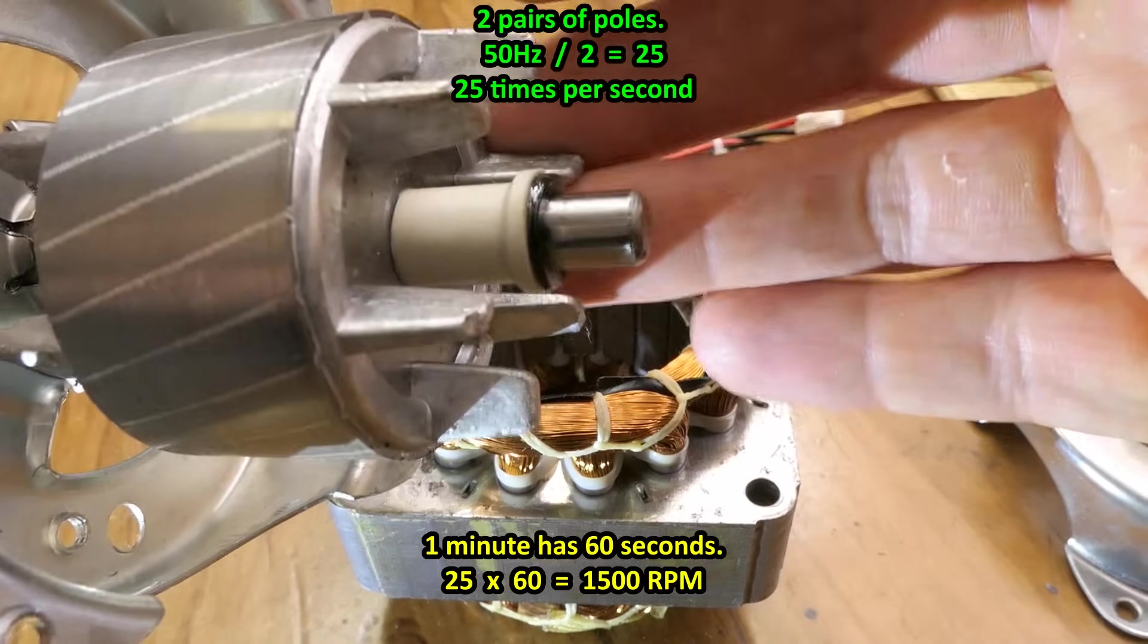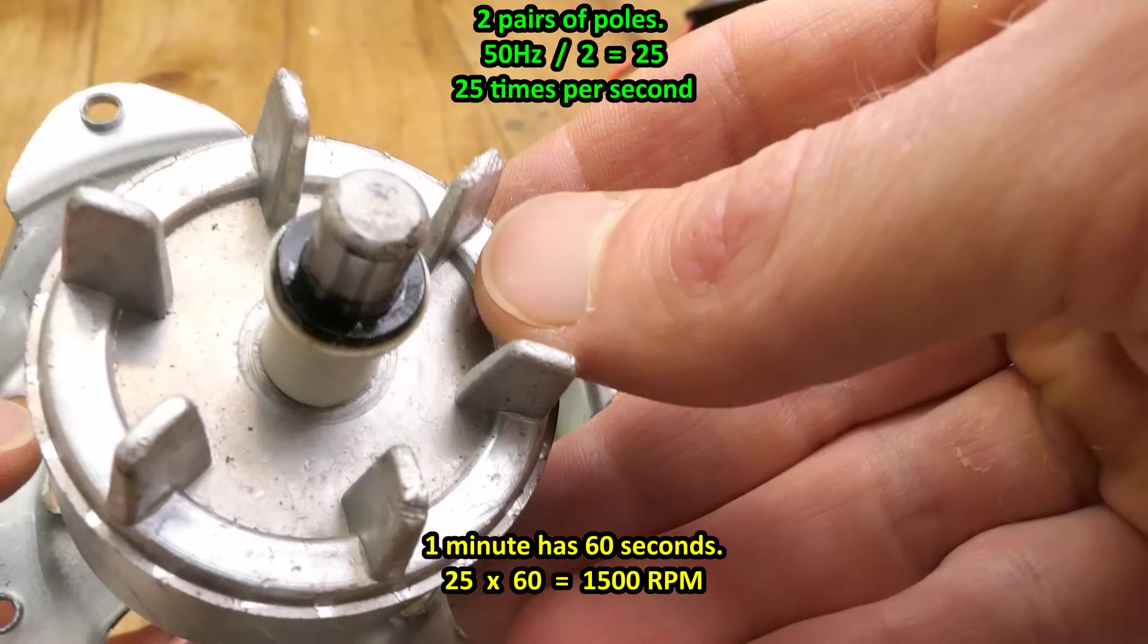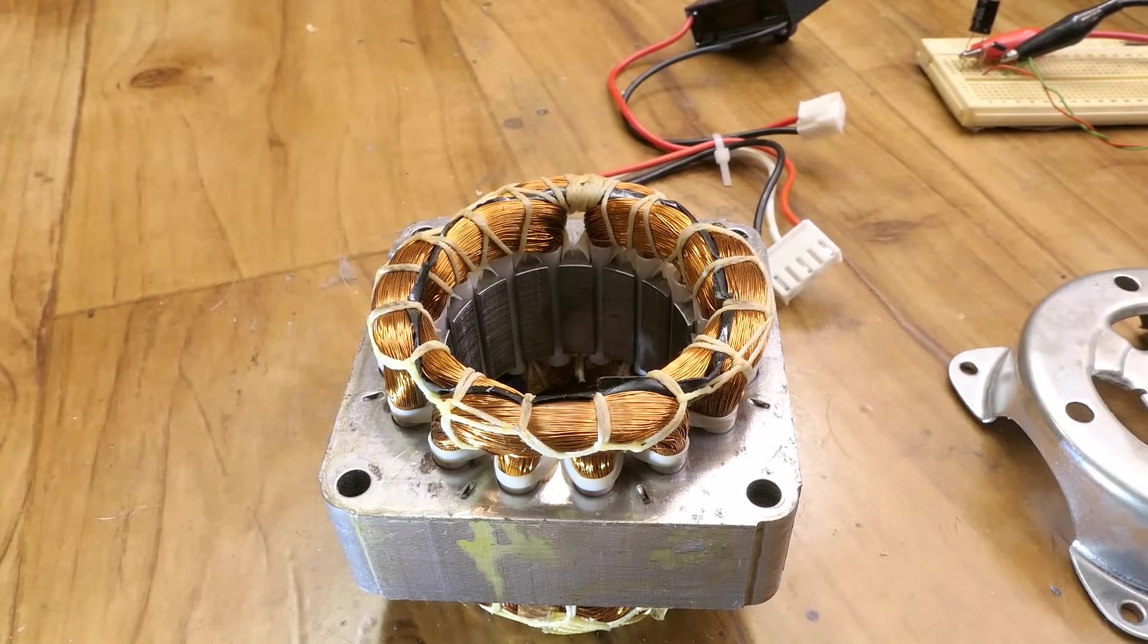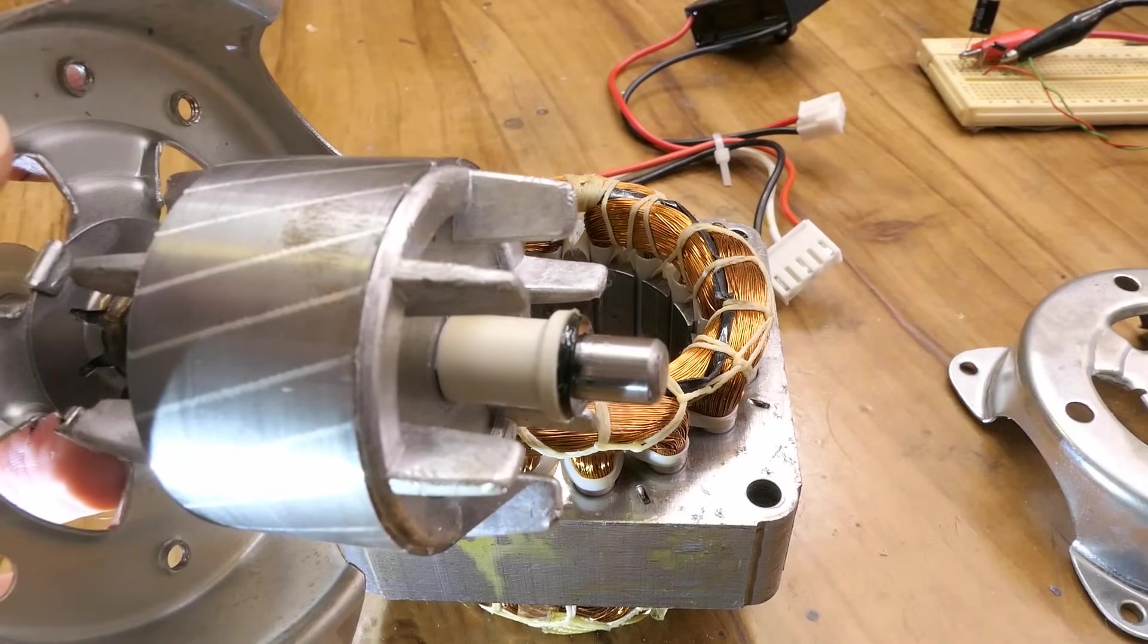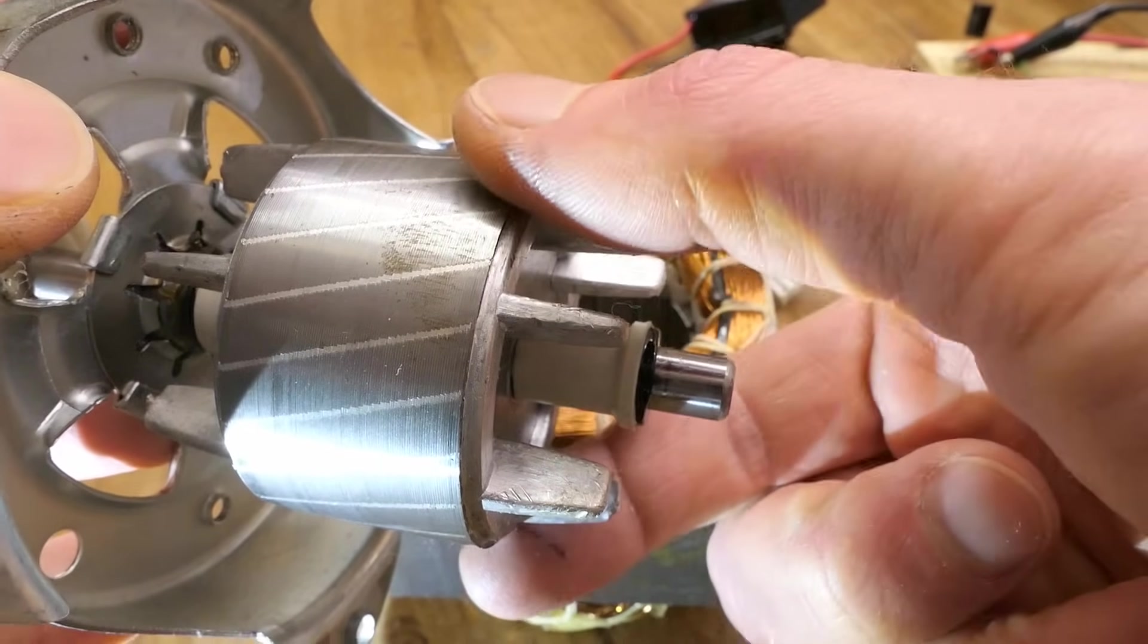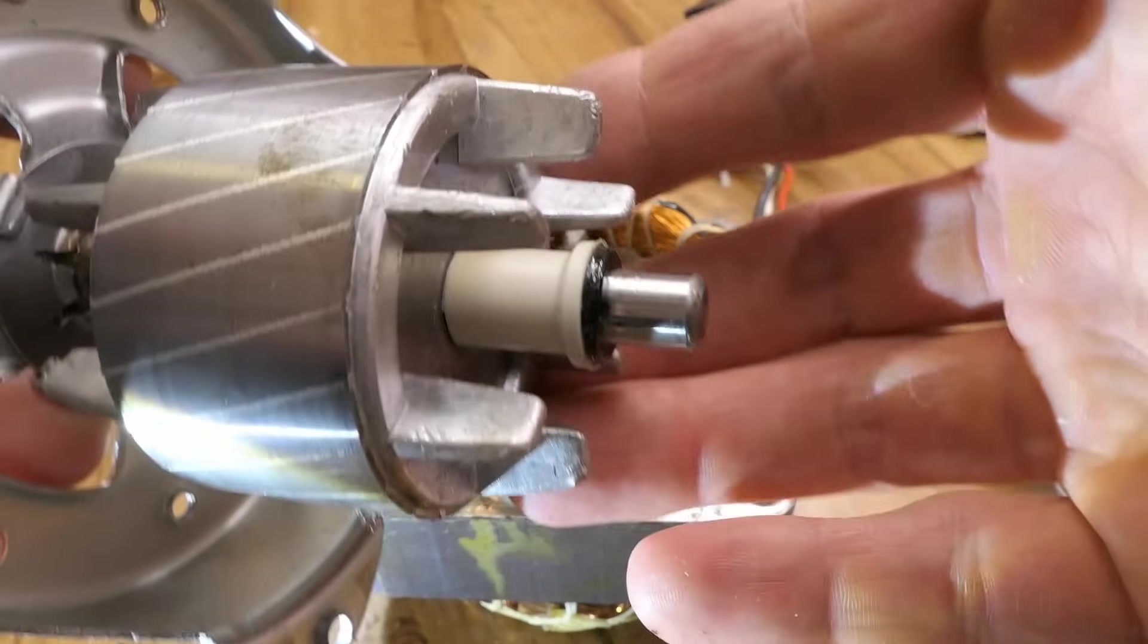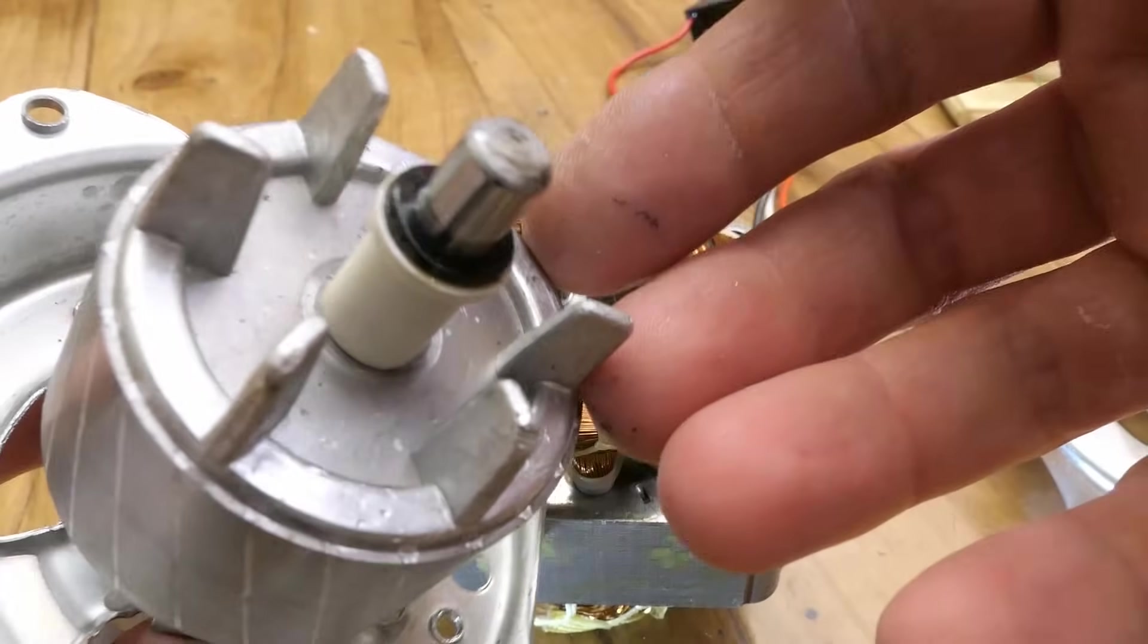The rotor is basically an iron core with a short turn or a lot of short turns made of aluminum in it. It's not superconductive so the magnetic field has to be slowly slipping in it moving in reference to the rotor to generate its own magnetic field in it by basically inducing a current in the short turns.